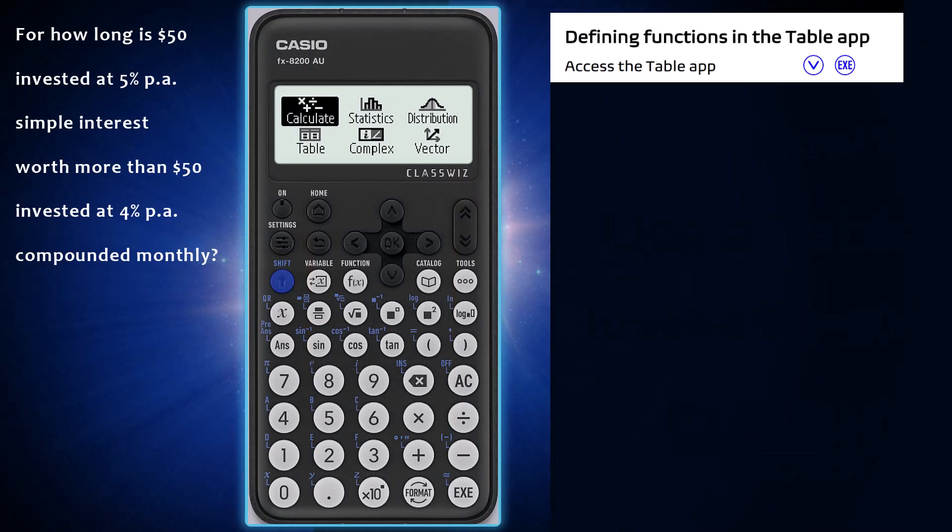Generating a table of values using a Casio FX 8200 AU is useful for doing things like finding when the value of this first investment is exceeded by the value of this second investment.